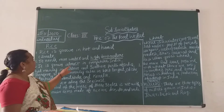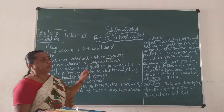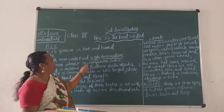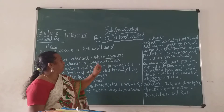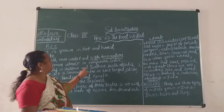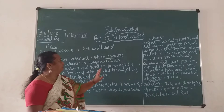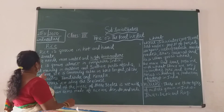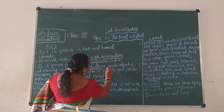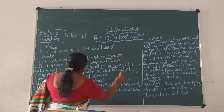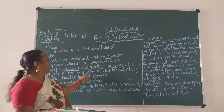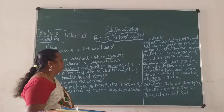It is growing almost everywhere in India. Where is it growing, children? It is growing almost everywhere in India, but mainly in the eastern and southern parts of India. Therefore, rice is commonly eaten in West Bengal.